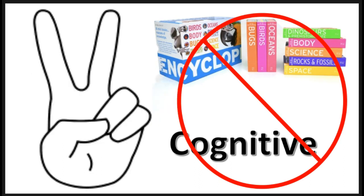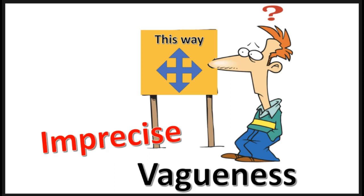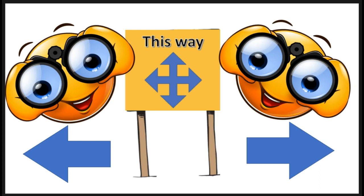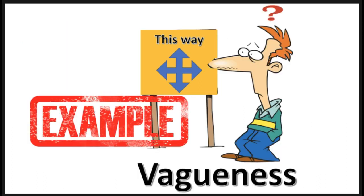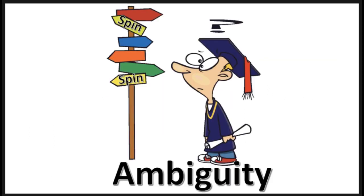Cognitive meaning can be defective in two ways, which are vagueness and ambiguity. A vague expression is an expression that is imprecise and can be interpreted in different ways. Examples of vague words would be cool, nifty, poor, sharp, bright, etc.